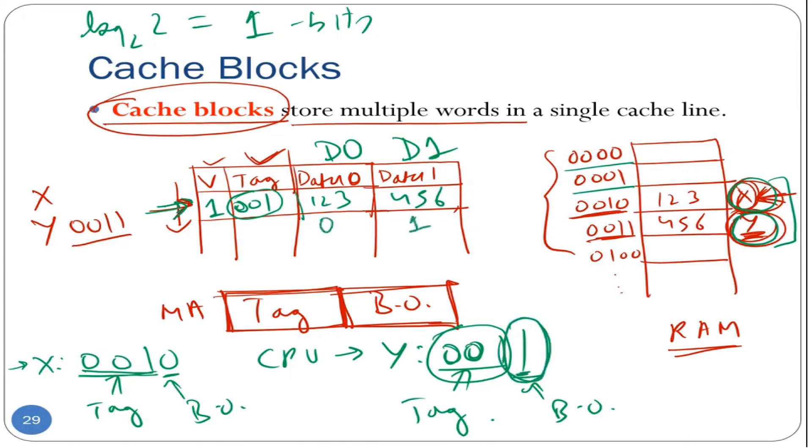This is block offset zero. The second one is block offset one. So this is essentially data zero is block offset zero, data one is block offset one. So because the block offset of this memory address is one, we are looking for 456 and not 123. So this is how cache blocks can be used to store multiple data items in a single cache row and help us exploit spatial locality.